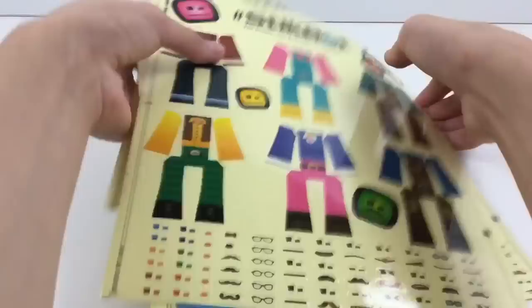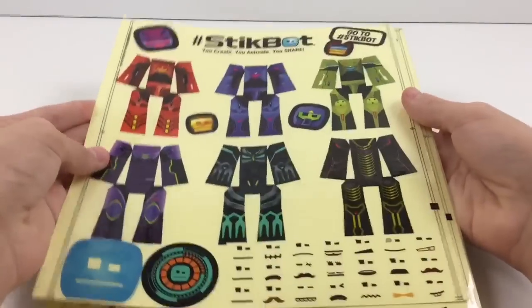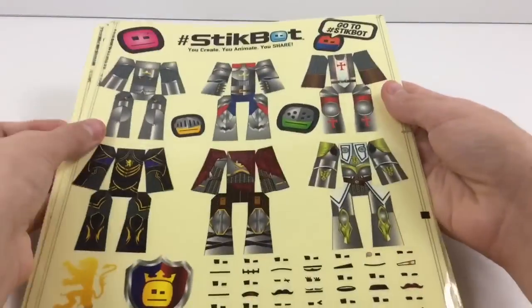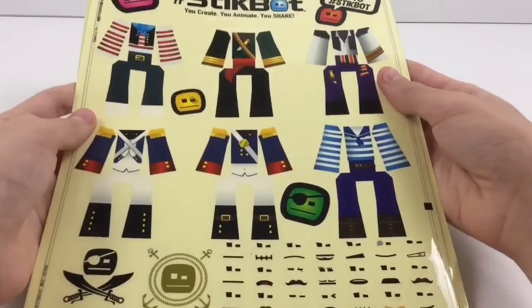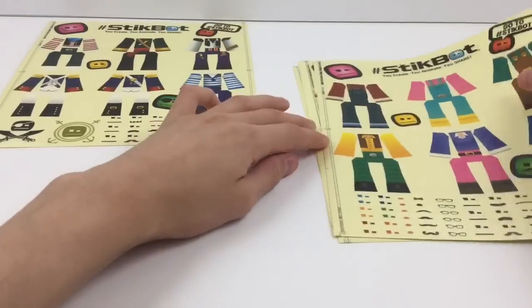The Stickbot movie sets are awesome, but it feels like something's missing. Oh right, they come with sticker sheets that include clothes and facial expressions for your Stickbots. So how exactly do they all work? Well, we're going to find out in this video.